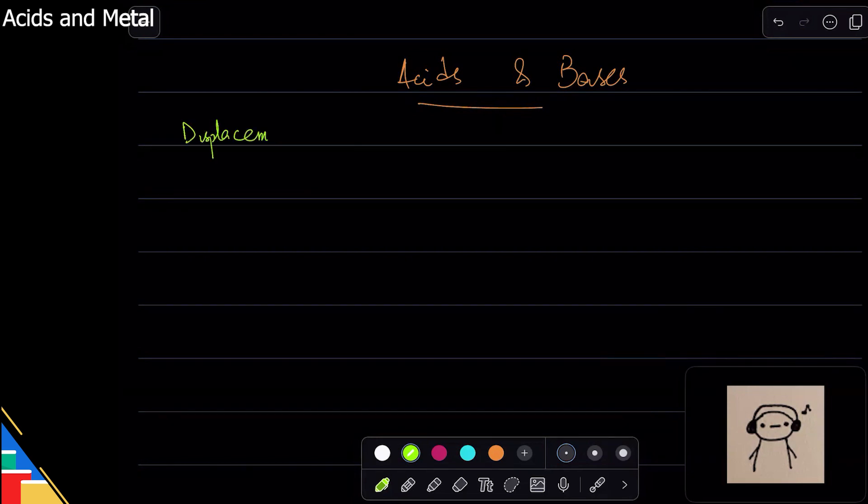In this reaction, anything will react with acid but replace or displace the hydrogen ion, and that's obviously something that makes positive ion. Which makes positive ion?